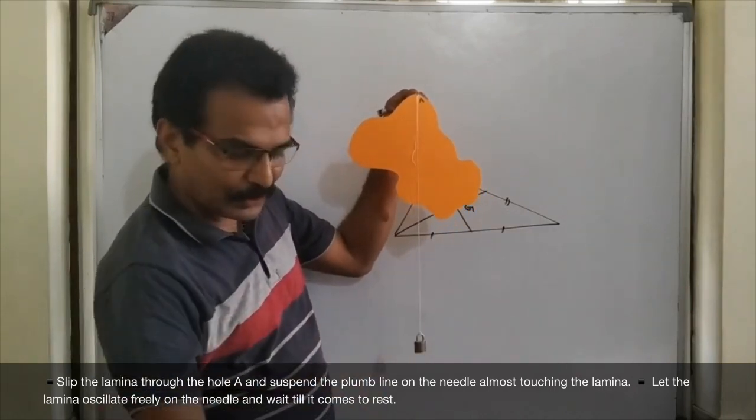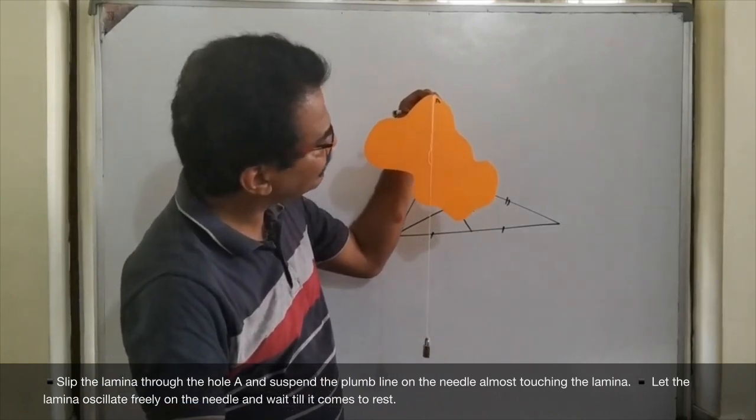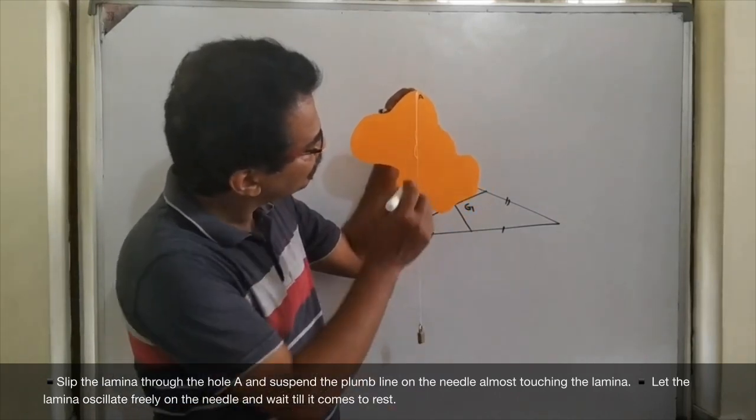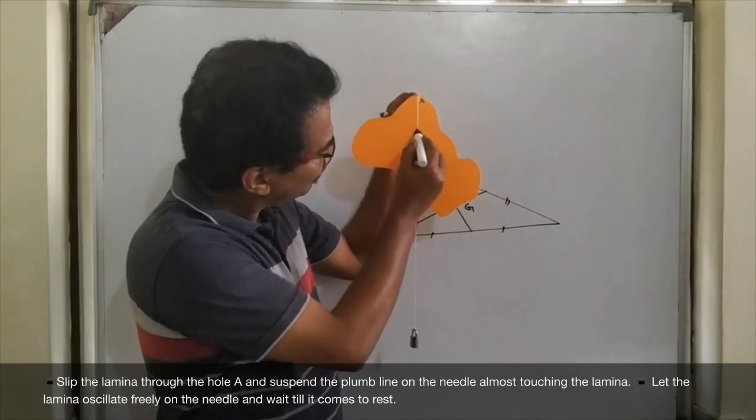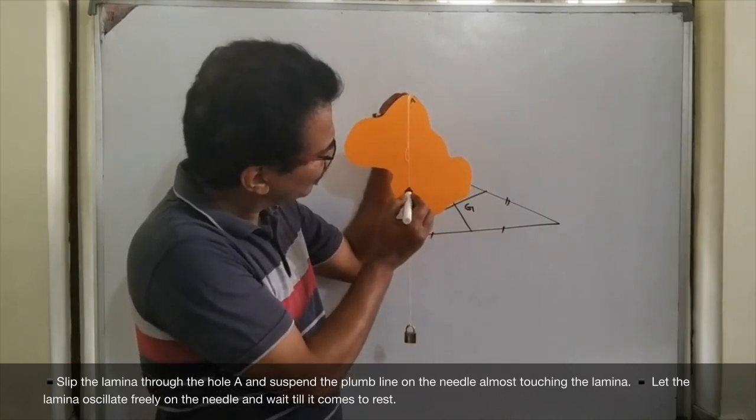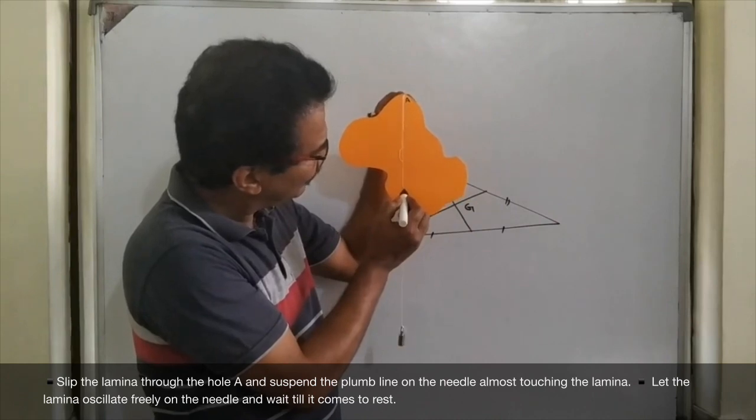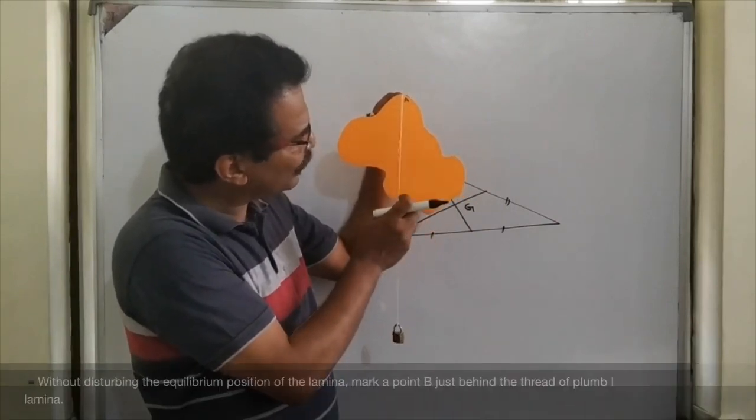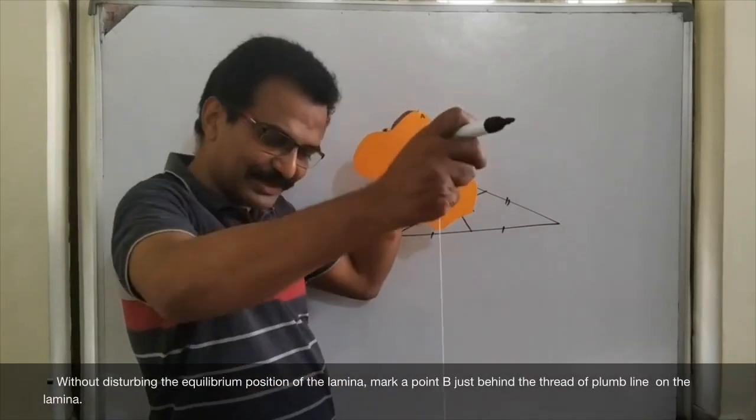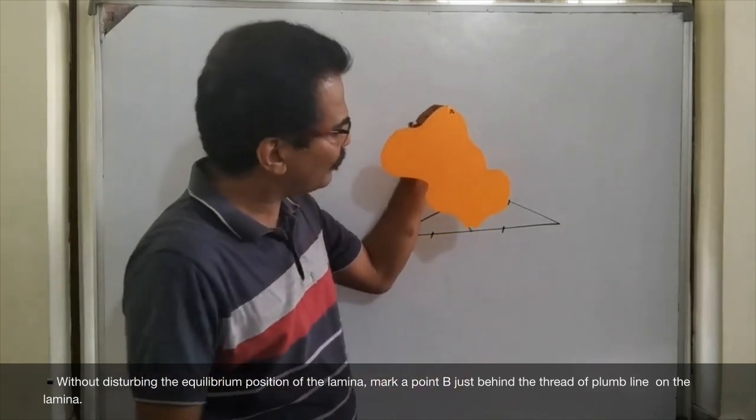To draw the line, you will mark one more point. See. Very successfully. You have to do that patiently. Yes. I got the point. I am marking that point as B.